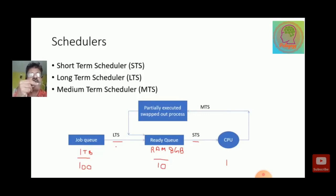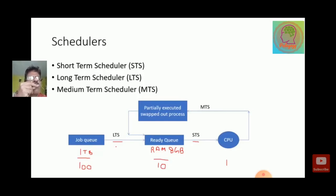The ready queue may contain 60% CPU bound and 40% IO bound, or 40% CPU bound and 60% IO bound. Whenever the medium term scheduler sees a process under IO bound that may contain two or three IO-related instructions, it swaps it out from the CPU and sends it back to the ready queue. So these are the different kinds of schedulers: short term, long term, and medium term. In our syllabus, we have only numericals under the short term scheduler.